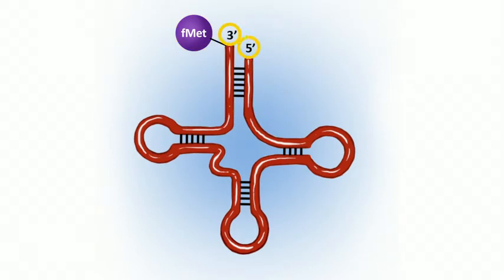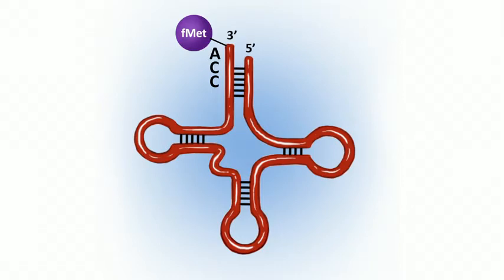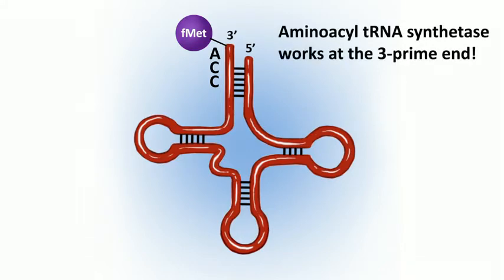A molecule of tRNA has a 3' end and a 5' end. The 3' end is the hydroxyl end and it always ends with the sequence CCA — cytosine, cytosine, adenine. This is the end at which aminoacyl-tRNA synthetase works. So the amino acid is attached to the tRNA molecule at the 3' end so that it can be used to generate the polypeptide.